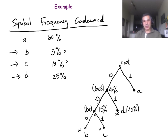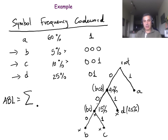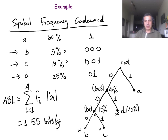The codeword for A is 1 — just a single bit. The codeword for B is 0, 0, 0. The codeword for C is 0, 0, 1. And the codeword for D is 0, 1. Now that we have these codewords, we can calculate the average bit length of this encoding: the summation across all four symbols of their frequency times the length of the codeword, which is also the depth of the corresponding letter in the tree. If you do the calculations, you will get 1.55 bits per symbol, which is less than a fixed-length encoding scheme that would give two bits to each of these four symbols.